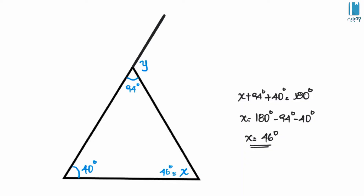This is the line. The line is a straight angle. Y is equal to 180 degrees minus 94 degrees, so Y is equal to 86 degrees.